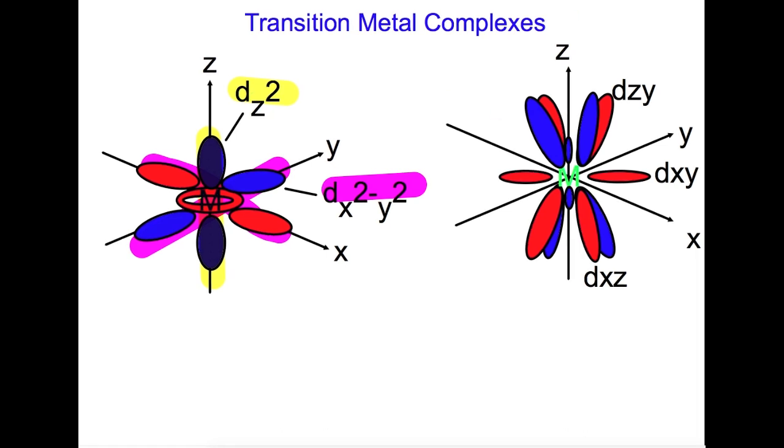The other orbitals face in between the axes. So we have the dzy, which is in between the z-axis and the y-axis. That's this one here. We also have the dxy, which is between the y-axis and the x-axis, and then finally the dxz between the x-axis and the z-axis.